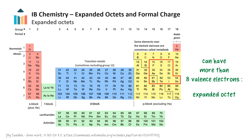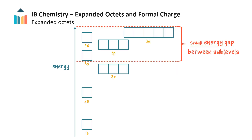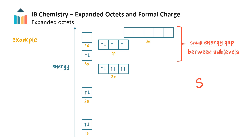More than 8 electrons in a valence shell is called an expanded octet. The reason why these elements can have more than 8 electrons in their valence shell is that the energy of their valence d subshell orbitals is very similar to that of the other valence subshell orbitals — there is a small energy gap. Using sulfur as an example, whose valence shell is the third energy level, when forming certain compounds it can use empty d orbitals to accommodate additional electrons.